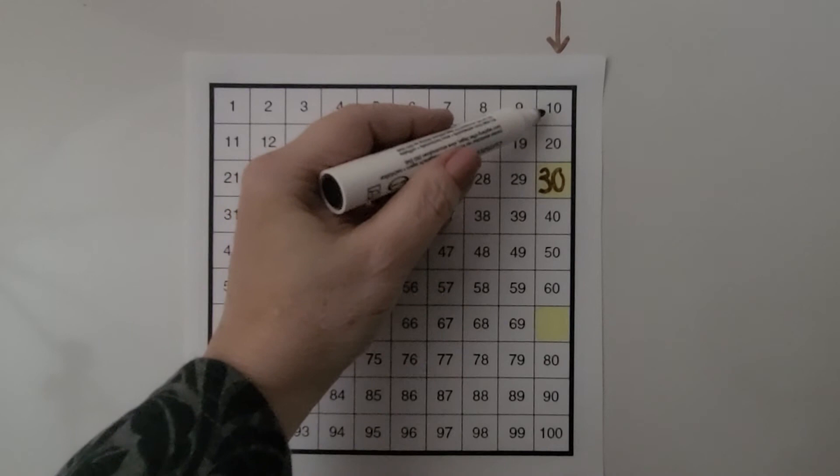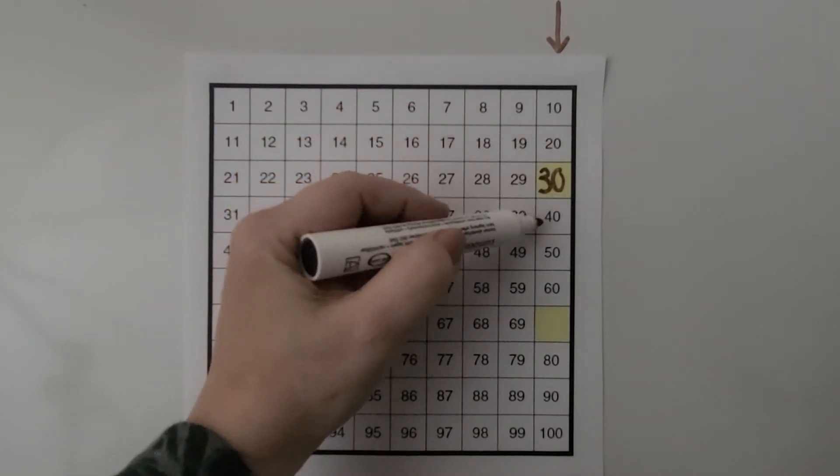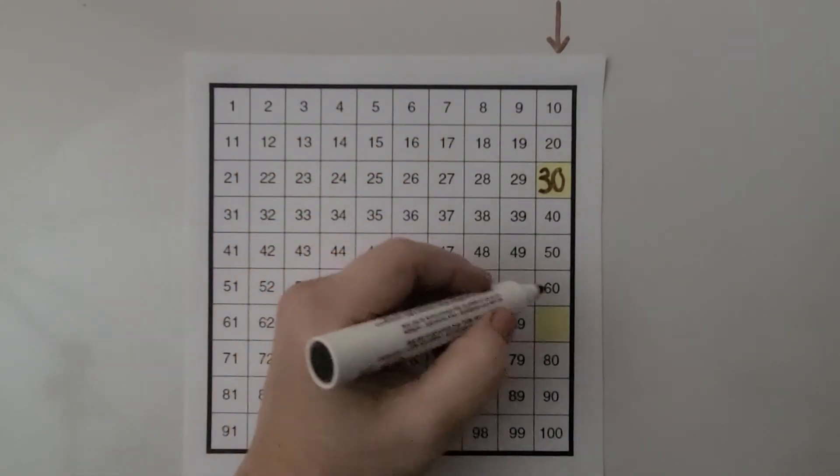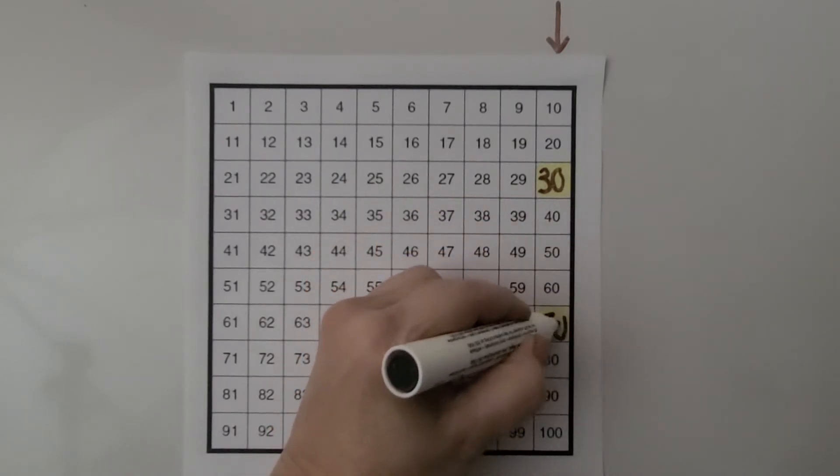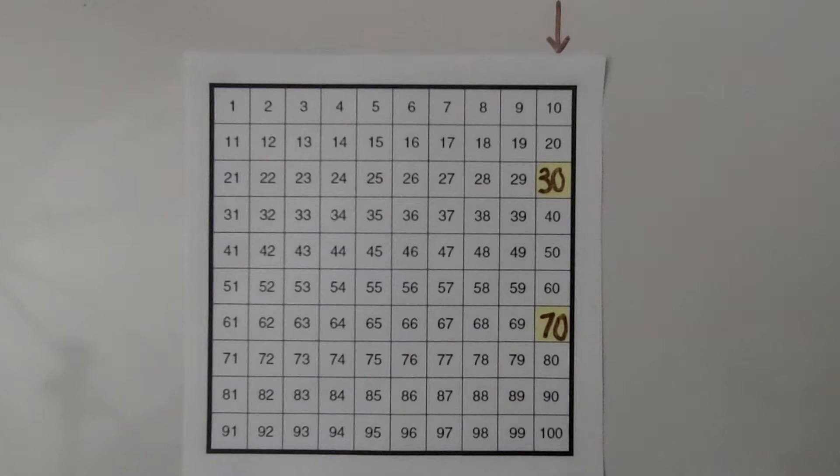In counting order, we went one, two, three, four, five, six. That must start with a seven, and they all end with a zero, so it needs a zero. It's the number 70. Seventy is one greater than 69. After 69, 70 is the next number.